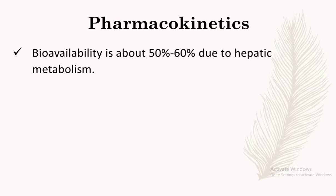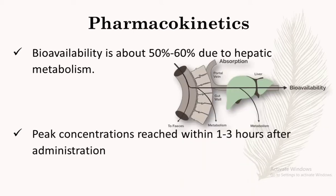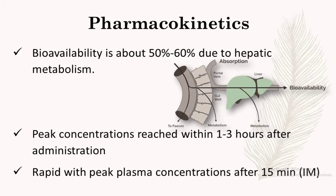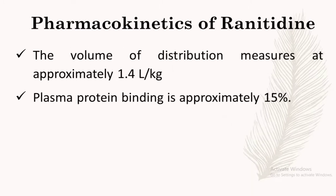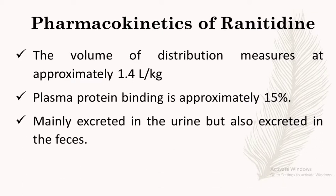Let's learn about the pharmacokinetics of ranitidine. Because of hepatic metabolism, the oral bioavailability of ranitidine is just 50 to 60 percent. Peak concentration of ranitidine reaches within one to three hours after oral administration. If given IM, the Tmax is 15 minutes. The volume of distribution is about 1.4 liters per kg, having 15 percent plasma protein binding.